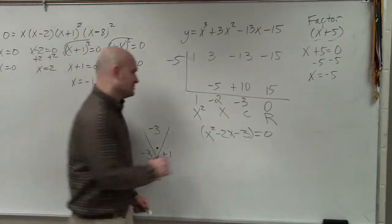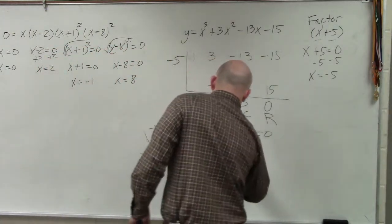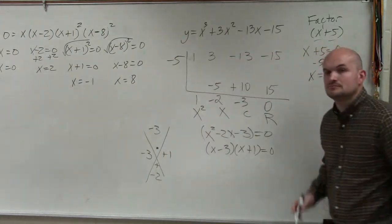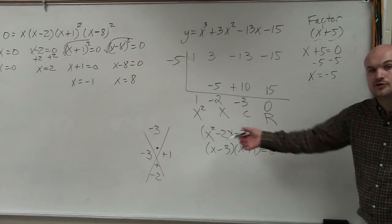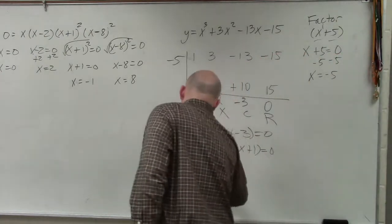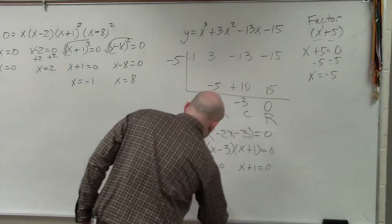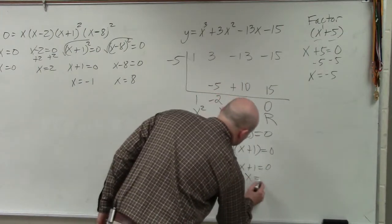So therefore, our factors is x minus 3 times x plus 1 equals 0. So now you set these equal to 0. x minus 3 equals 0. And x plus 1 equals 0. Therefore, x equals 3 and x equals negative 1.